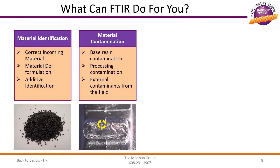Another common use of FTIR is to identify the chemical makeup of contamination and help determine its source. This analysis can provide information that will greatly reduce downtime and help to increase the quality of components in a timely fashion. Additionally, field contaminants can be identified to help accelerate failure analysis efforts.